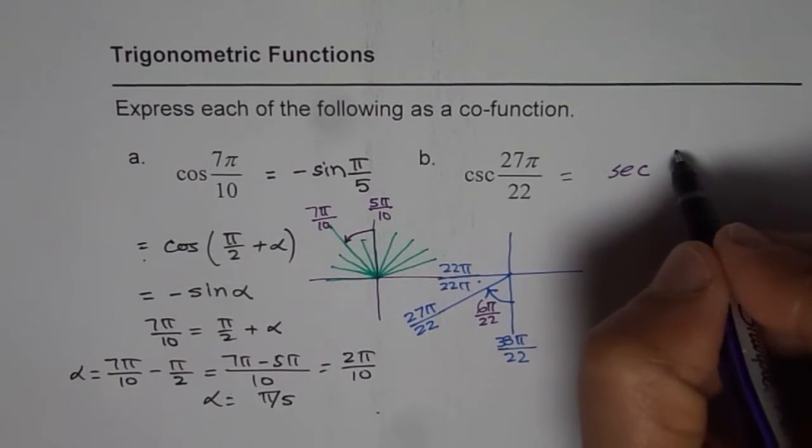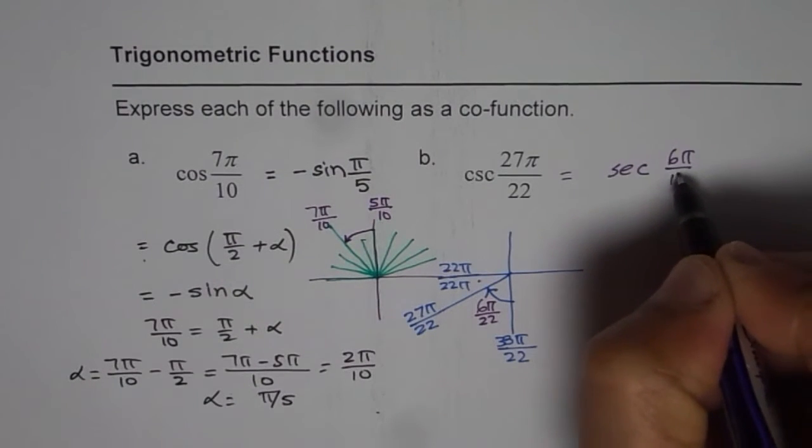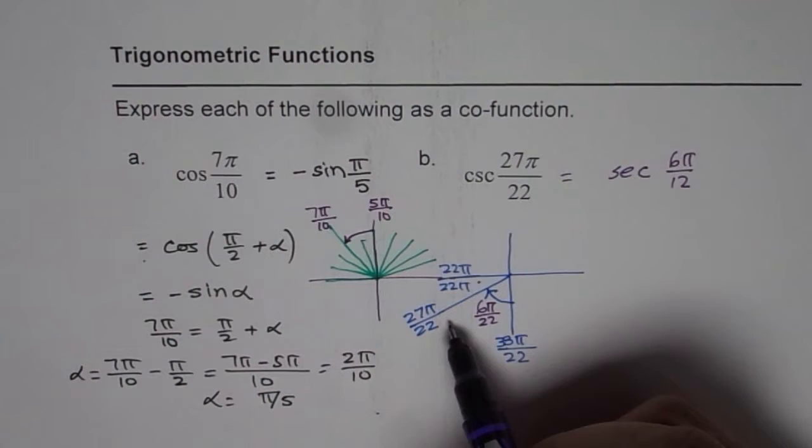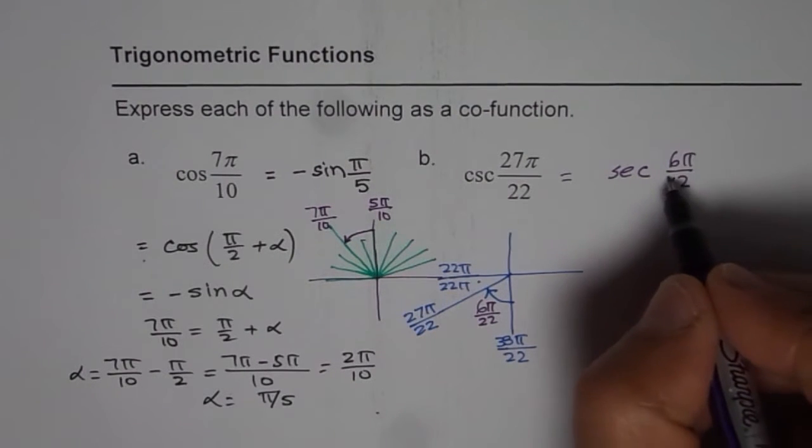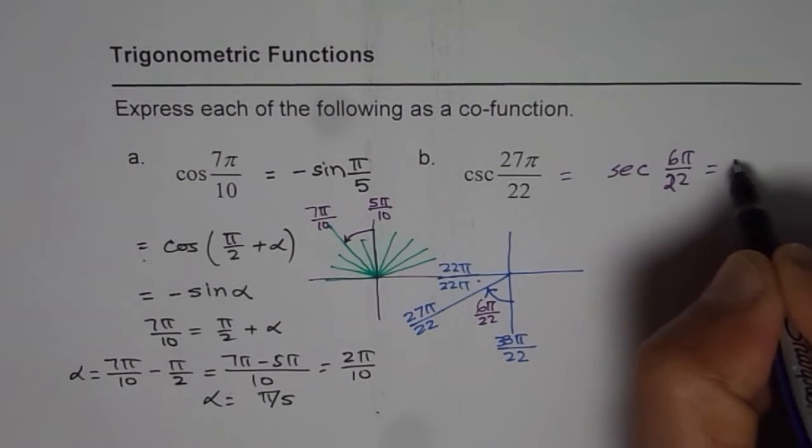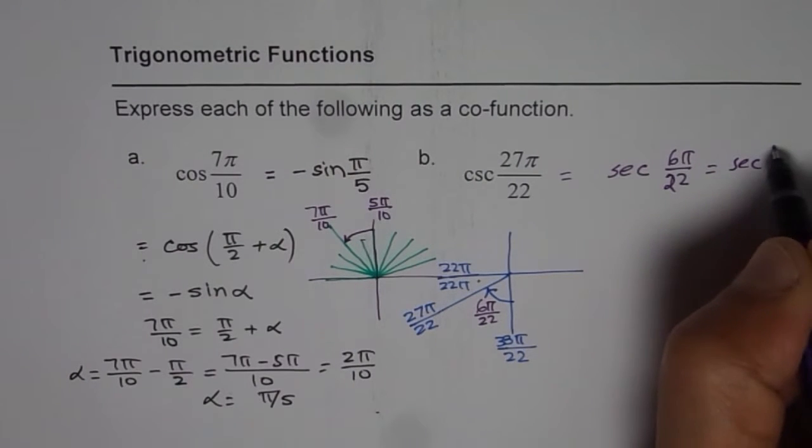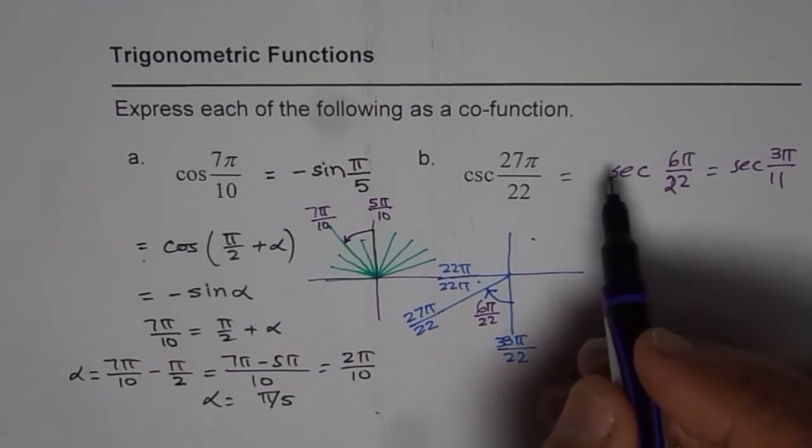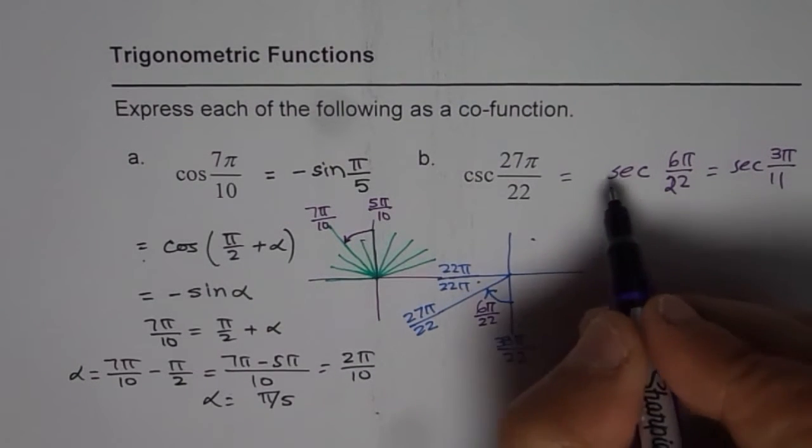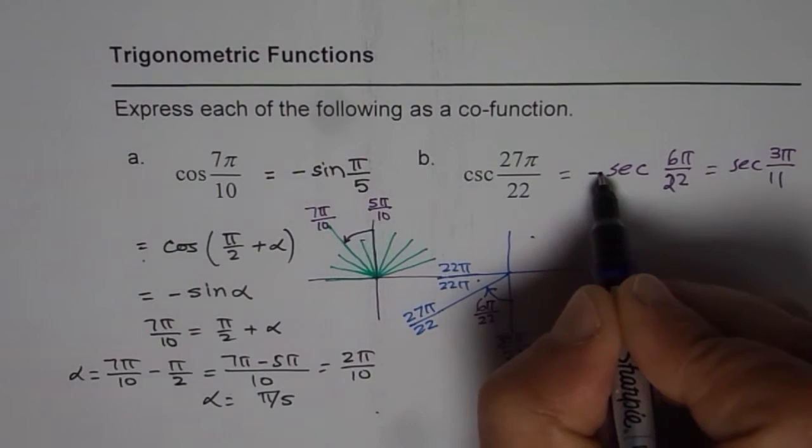Now secant 6π/22, we can divide by 2. So 3π/11. So 6π/22 or 3π/11 will happen in the quadrant 1. It will be a positive value. So we have to take the negative value of this.